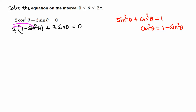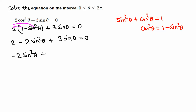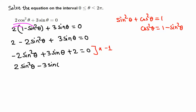Distributing gives us 2 minus 2 sine squared theta plus 3 sine theta equals 0. Putting this in standard order: negative 2 sine squared theta plus 3 sine theta plus 2 equals 0. We multiply both sides by negative 1 to get 2 sine squared theta minus 3 sine theta minus 2 equals 0.